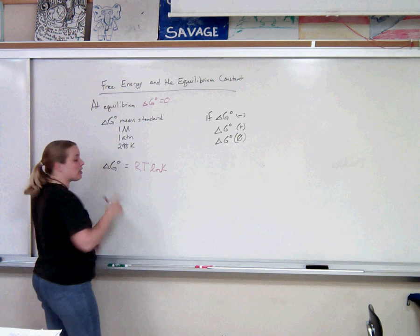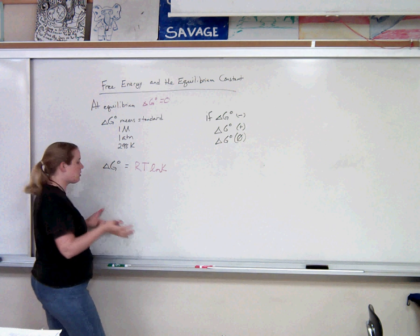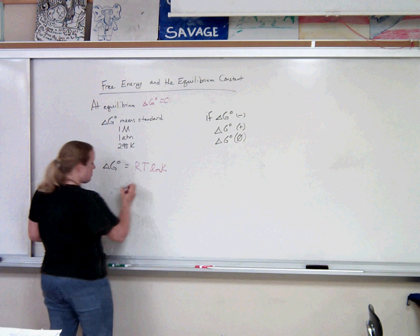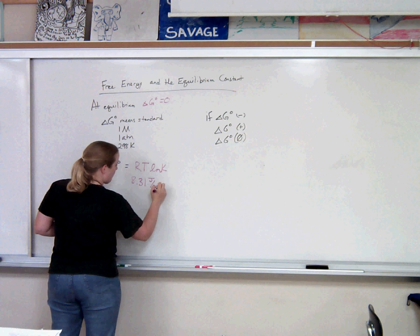Because Gibbs has what kind of unit? Joules. So we need our R to be the R for Joules. And the R for Joules is 8.31 Joules per mole Kelvin.